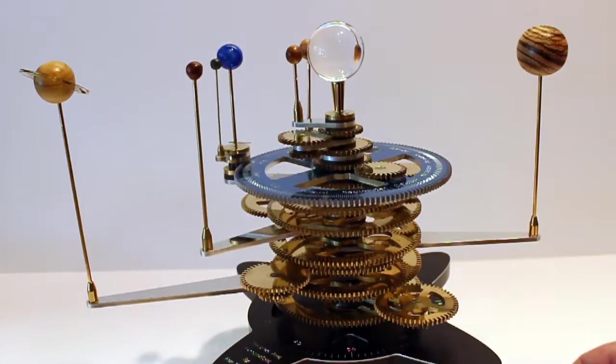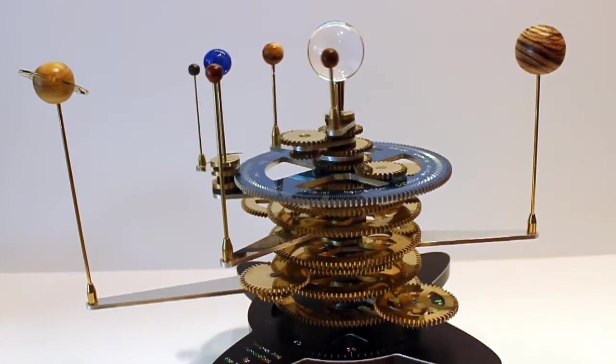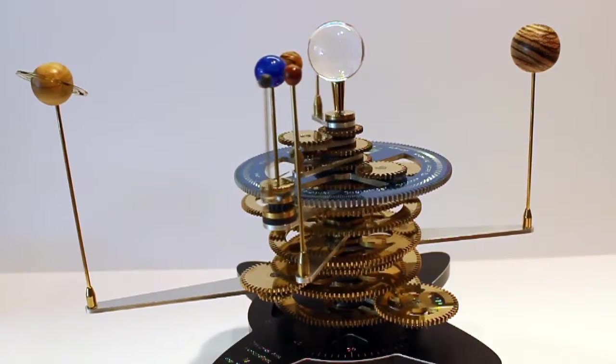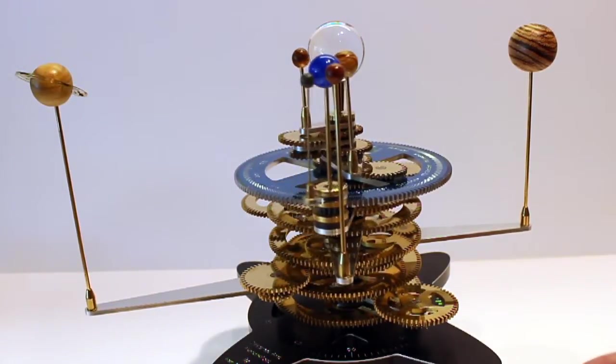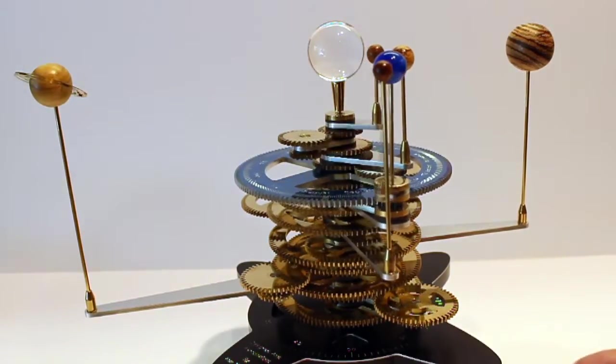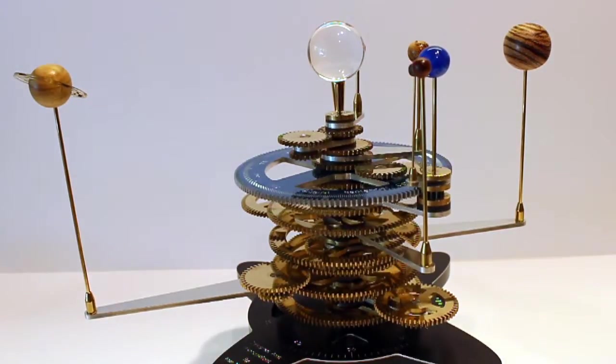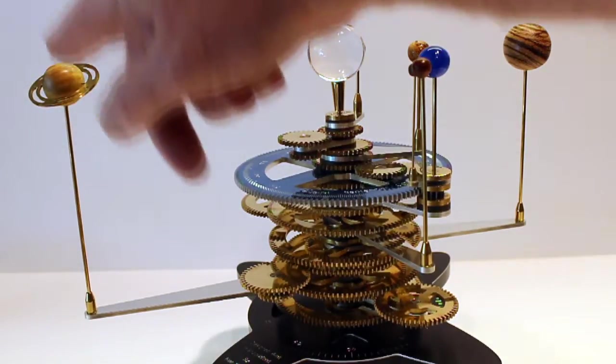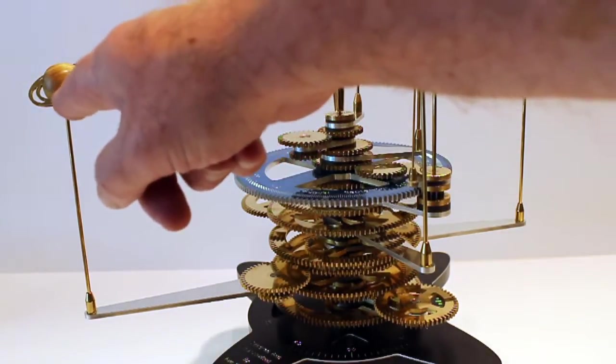You watched me make Jupiter and put the rings on Saturn, but here you can see all of the planets. Jupiter that we made is African zebra wood. Saturn is made from canary wood.